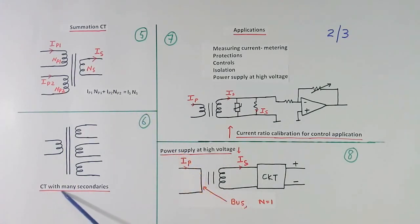Then there are CT available with many secondaries. Primary will be 1. Suppose we require metering in many places. Same current we want to display in many places. That time this kind of CT are used.